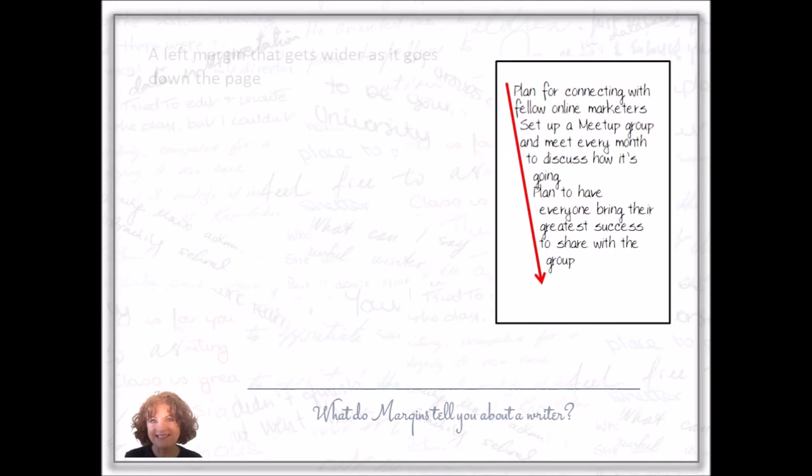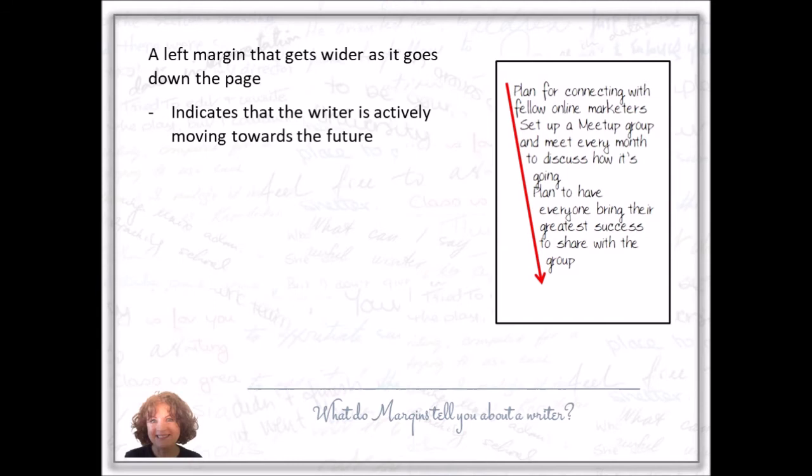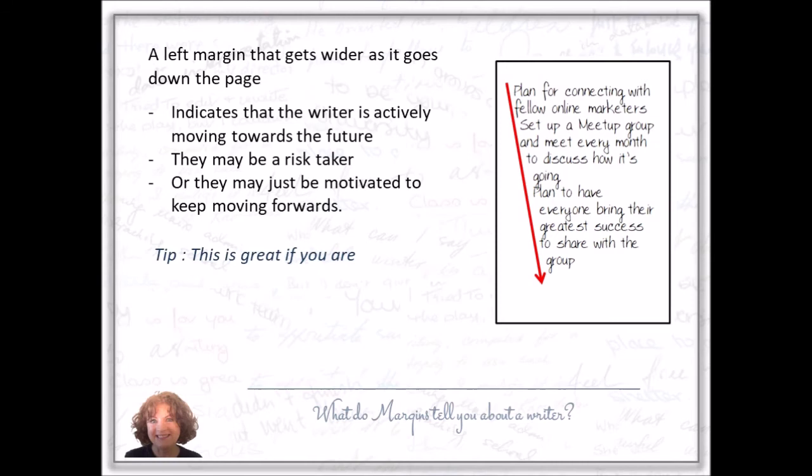A left margin that gets wider as it goes down the page indicates that the writer is actively moving towards the future. They may be a risk taker, or they may just be motivated to keep moving forwards. So they start where they are now and they go towards the future as they go down the page. Tip: this is great if you're proposing new ideas, but be careful that they're not taking unrealistic risks. The more drastic the angle of the margin, the more likely they are to take unrealistic risks. This one is not too bad in the example.